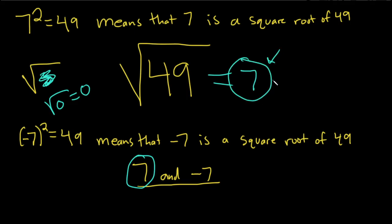So that's the answer. Now, again, 49 does have two square roots, but this symbol means that we only want the positive one.